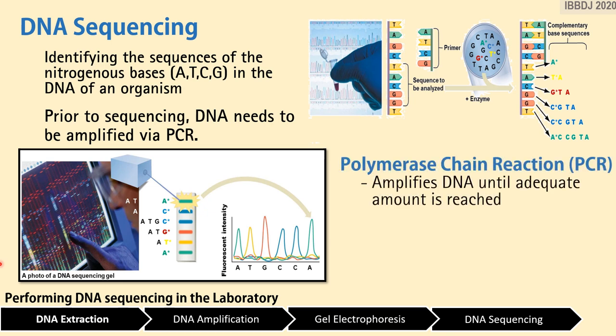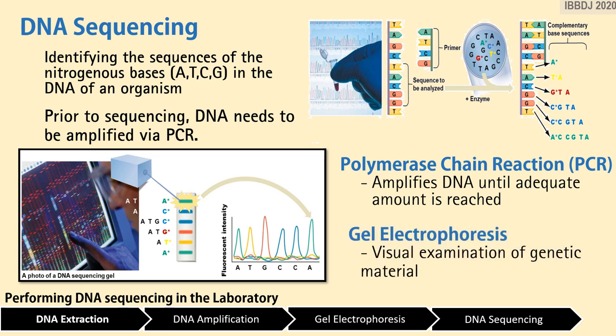Polymerase chain reaction is a method which amplifies or replicates DNA segments until a sufficient amount is reached. Since DNA is very small, producing more of the target DNA segment is necessary for application. Gel electrophoresis, on the other hand, is the visual examination of genetic material.